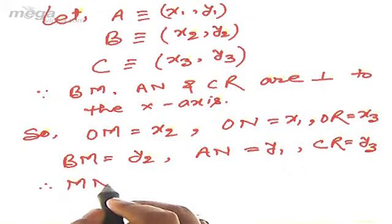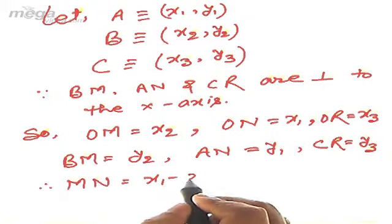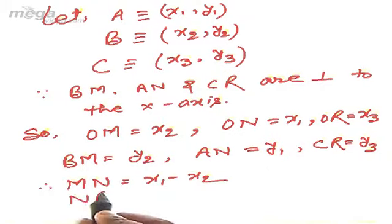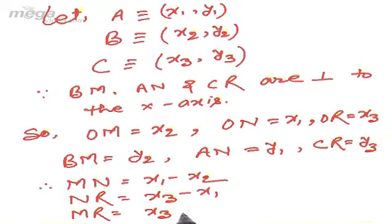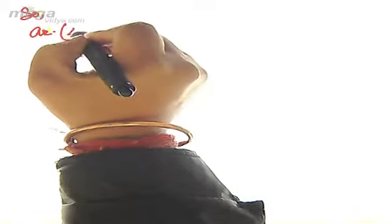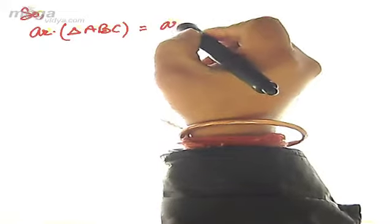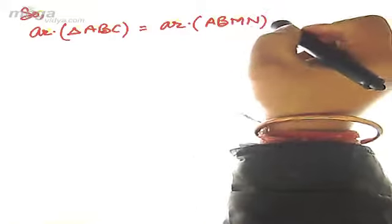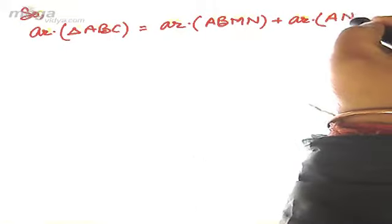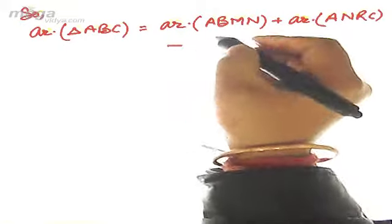Therefore MN = x1 − x2, NR = x3 − x1, and MR = x3 − x2. According to the figure, the area of triangle ABC equals the area of trapezium ABMN plus the area of trapezium ANRC minus the area of trapezium BCRM.